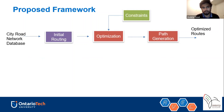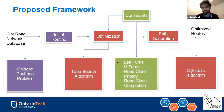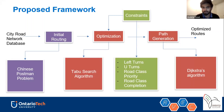Looking deeper into the framework: for initial routing we used the Chinese Postman Problem algorithm; for optimization we used the Taboo Search algorithm. The constraints included left turns, U-turns, road class priority, and road class completion. For path generation we used the D* (Dijkstra's) algorithm, which is a shortest path algorithm.